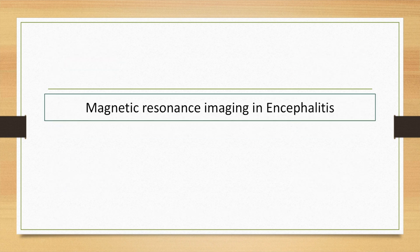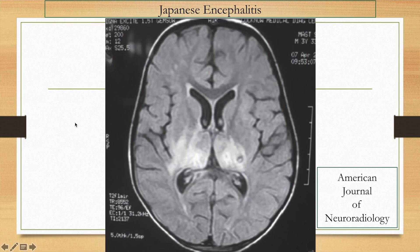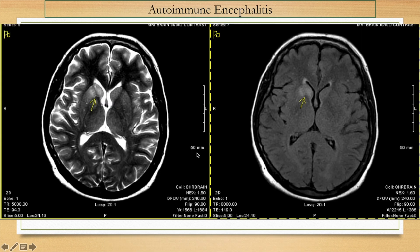These are some of the magnetic resonance images in encephalitis. In herpes simplex encephalitis, the temporal lobe is predominantly involved. In Japanese encephalitis, the thalamus is involved, and this is the MRI picture of autoimmune encephalitis.